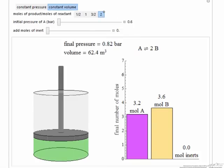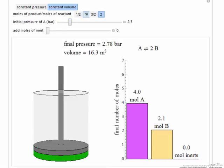If I look at A goes to 2B, notice the final pressure is 0.82 whereas the initial pressure was 0.6. The volume was fixed. If I increase the pressure initially, that decreases the initial volume, which is our fixed value.